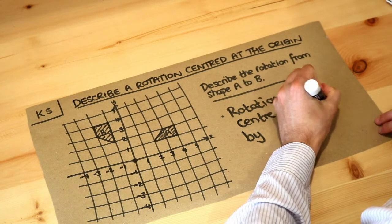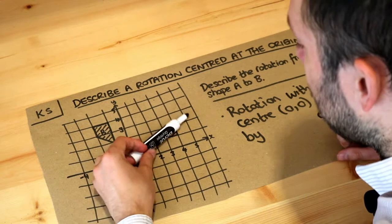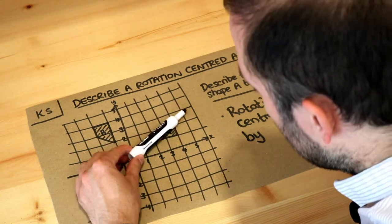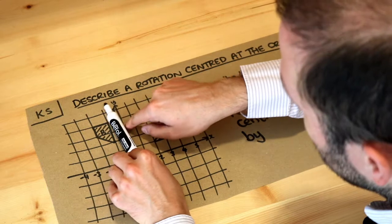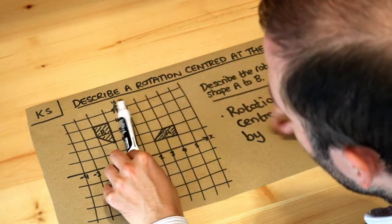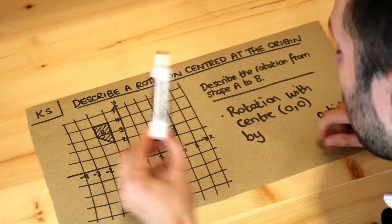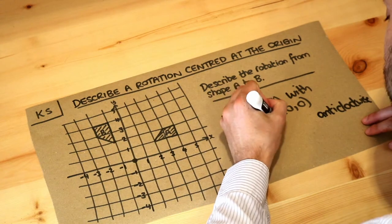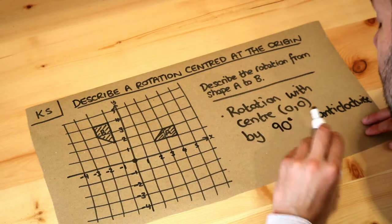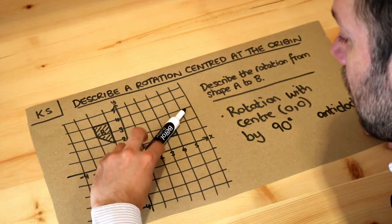We also need to give the angle it's spinning by. If you look at my pen here and I spin it to shape B, what angle was that? It's actually 90 degrees because a 90-degree angle is a quarter spin.